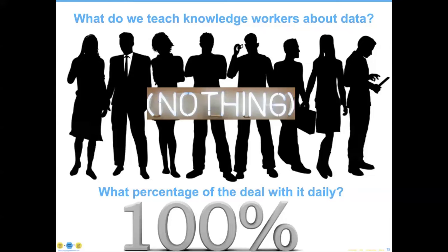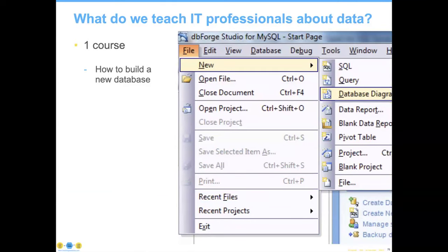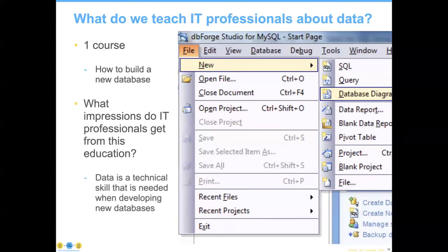Most people who deal with data know very little about it — much less than they should. We can't hope that IT professionals are going to get this, because for 30 years we've been teaching one course: how to build a new database. We've gotten a little better in recent years, teaching more data courses, but the requirement is still one core database course. This means that IT professionals get the sense that data is a technical skill only needed when developing new databases. If I'm going to move two databases together, or move from one ERP to another ERP, I don't need a data professional — is the thinking. I think it's incorrect thinking, but that's what we've trained them.